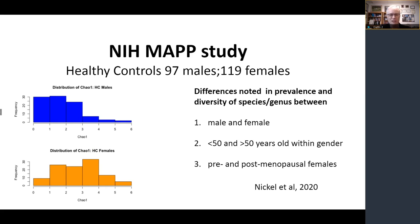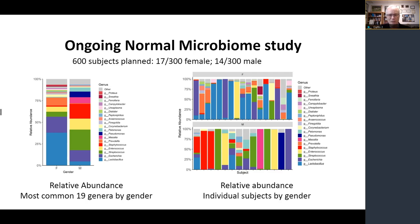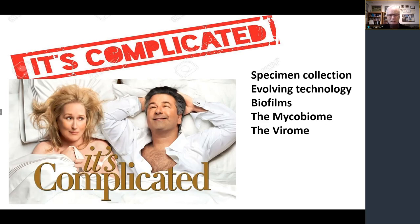Studies have shown that it's difficult to pick what actually is the normal urinary microbiome, but we do know differences in prevalence and diversity between males and females, between different ages, and for females, between pre- and post-menopausal. Large microbiome studies looking at normal asymptomatic individuals are presently underway, and that's going to help us determine what is an abnormal microbiome associated with urologic disease. It certainly is complicated. We know the specimen collection, whether it's from the bladder, catheterized specimen, urethral or vaginal swabs, makes a difference. The technology continues to evolve, and we have difficulty sometimes comparing one study to the other because they use different technology.